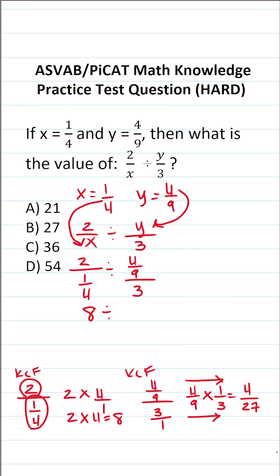So we have 8 divided by 4/27. What are we doing right here? We're dividing a whole number by a fraction. So once more, we're going to follow the algorithm keep, change, flip.